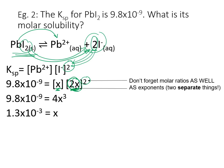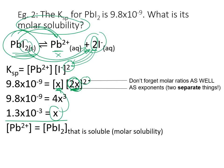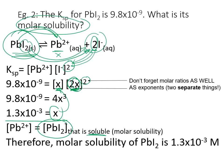Solving for x gives 1.3 × 10⁻³. This x value is the concentration of lead ions, or half the concentration of iodide. If the question asks for the molar solubility — how much lead(II) iodide dissolved — x = 1.3 × 10⁻³ mol/L is the answer. For every lead ion formed, one formula unit of lead(II) iodide dissolved, so x equals the amount that dissolved. Therefore, the molar solubility of lead(II) iodide is 1.3 × 10⁻³ mol/L.